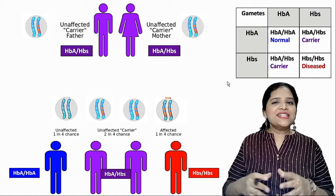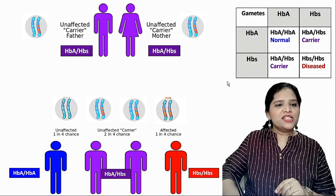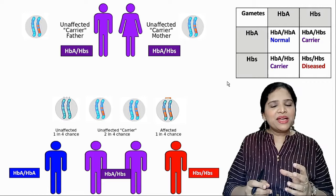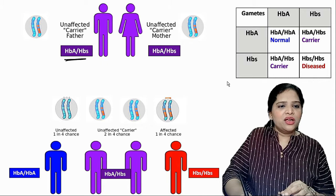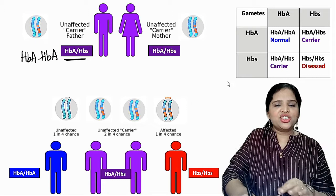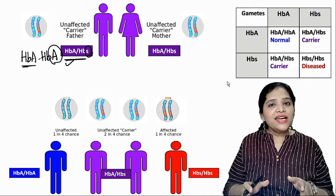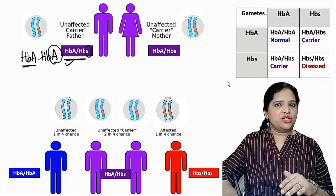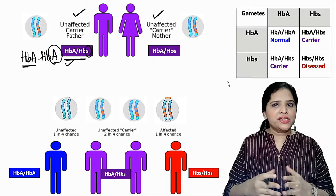Sickle cell anemia is an autosomal recessive disease. Let us understand how it is transferred from parent to offspring. Suppose both parents are carriers — carriers have one defective (mutant) gene and one healthy gene. In these carrier parents, one gene is normal (HBA) and one gene is defective. They are called unaffected carriers: they will not get affected but carry the defective gene.